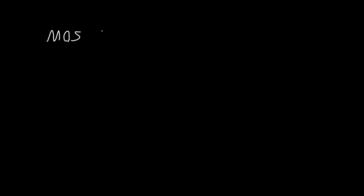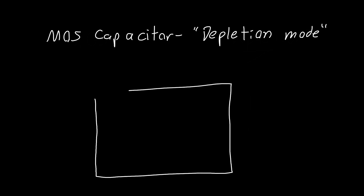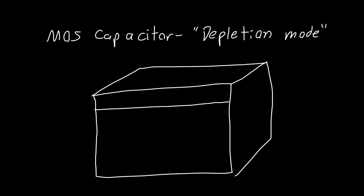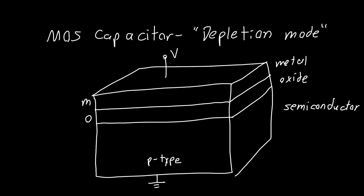In this video we're going to talk about the MOS capacitor in depletion mode. We call it depletion mode because we are depleting the carriers. If we redraw our MOS capacitor structure as a 3D cube, we know it has a metal, an insulating oxide, and a semiconductor. We'll assume this semiconductor is p-type, applying a certain voltage to the gate and grounding the body or bulk.